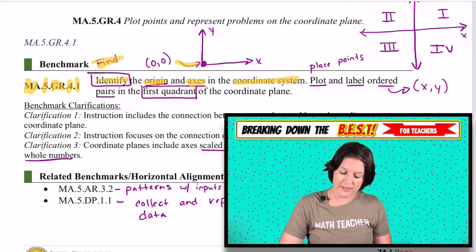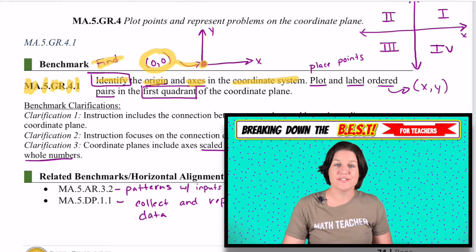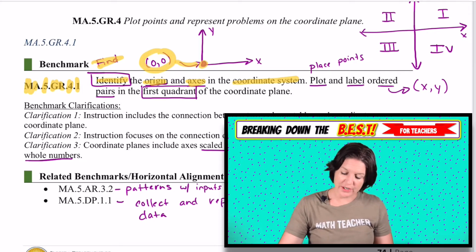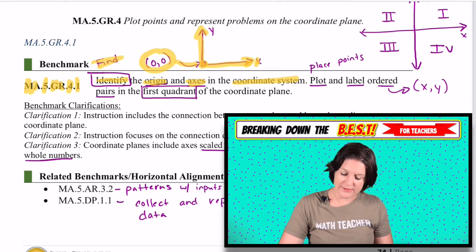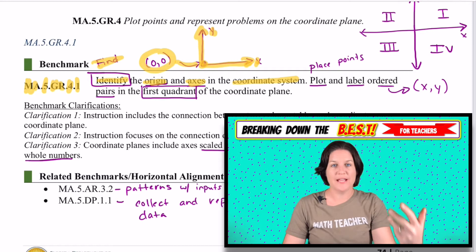The origin is located right here, and it would be labeled as (0, 0). And when they're talking about axes, they're talking about the x-axis and the y-axis. And the plural form would be axes.